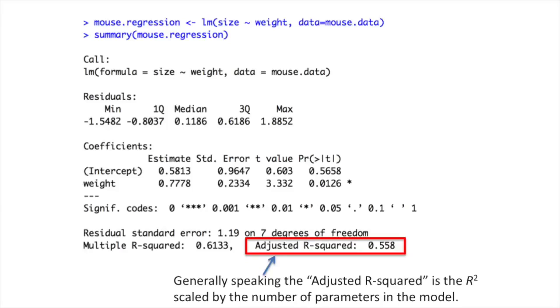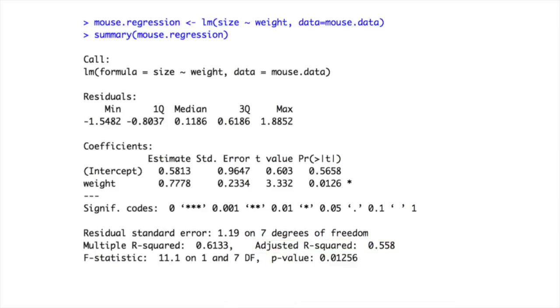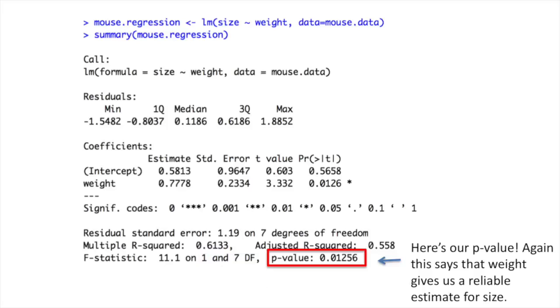Generally speaking, the adjusted r-squared is the r-squared scaled by the number of parameters in the model. The next line tells us if the r-squared is significant or not. This is the value for f. These are the degrees of freedom. And here's our p-value. Again, this says that weight gives us a reliable estimate for size.